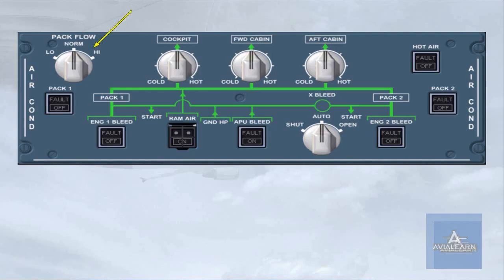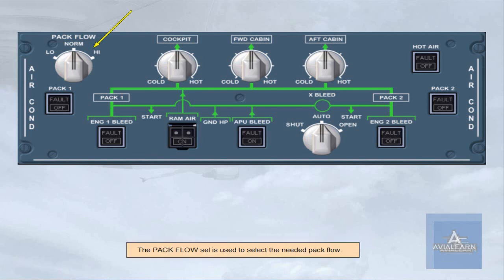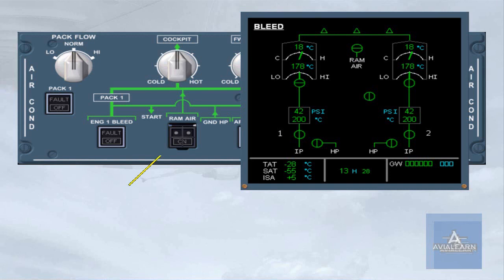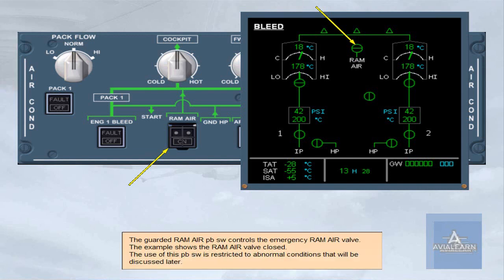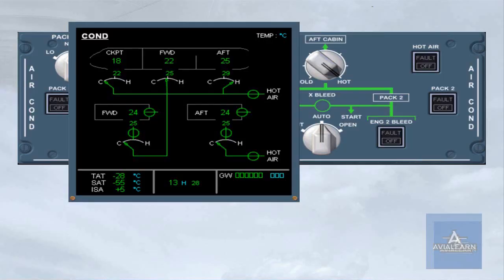The pack flow selector is used to select the needed pack flow. The guarded RAM air push button switch controls the emergency RAM air valve; the example shows the RAM air valve closed. The use of this push button switch is restricted to abnormal conditions, which will be discussed later. The hot air push button switch is associated with the hot air valve; in the example shown, the valve is open.